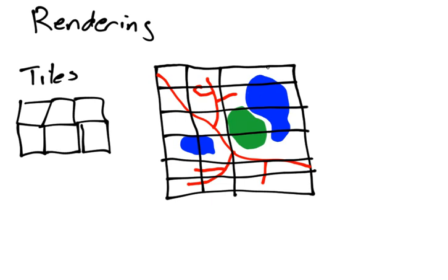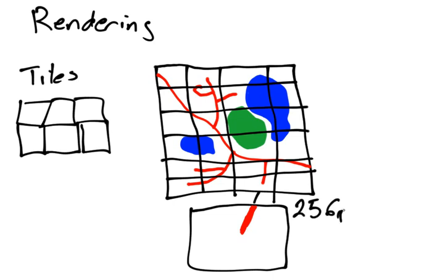And let me just show you what one of these images would look like. It would just look like this. So that's sort of what it would look like. And these images, these tiles, are generally 256 pixels by 256 pixels. So they're squares.